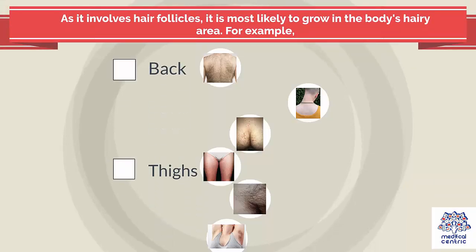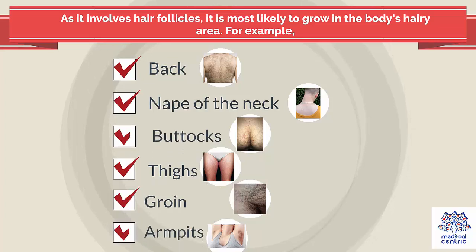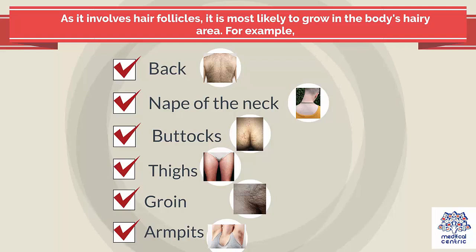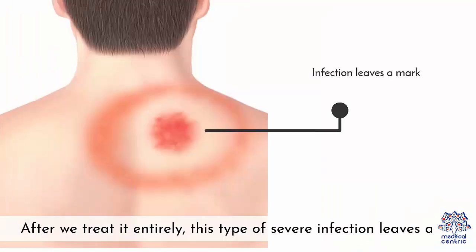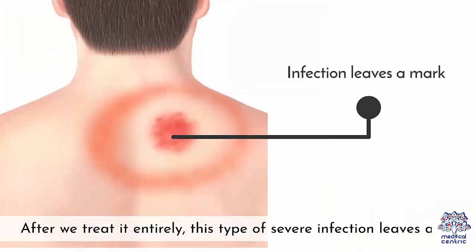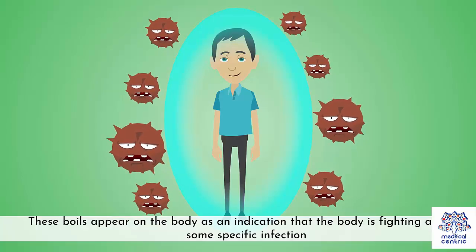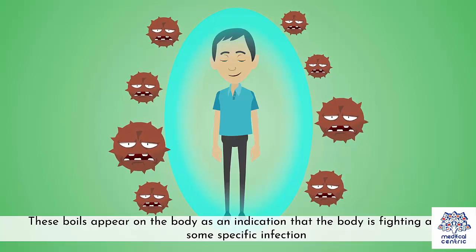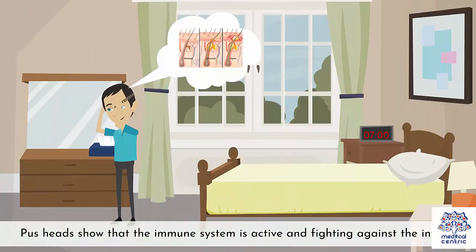As it involves hair follicles, it is most likely to grow in the body's hairy areas – for example, back, nape of the neck, buttocks, thighs, groin, and armpits. These are tender and painful. After we treat it entirely, this type of severe infection leaves a mark. These boils appear on the body as an indication that the body is fighting against some specific infection. Pus heads show that the immune system is active and fighting against the infection.